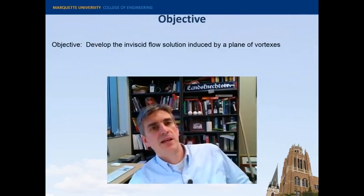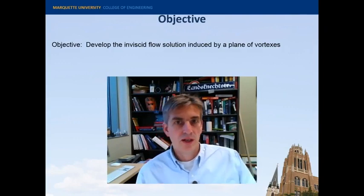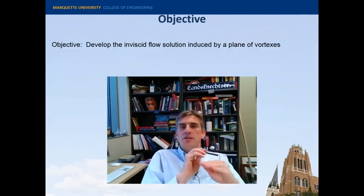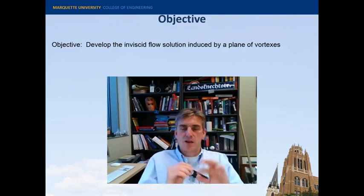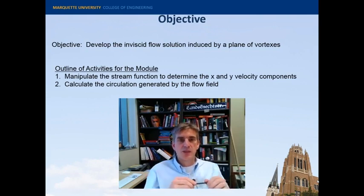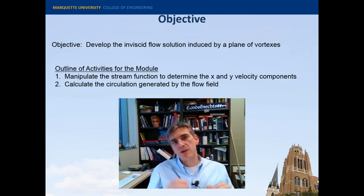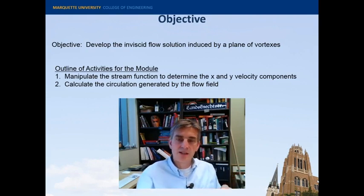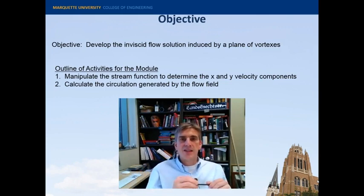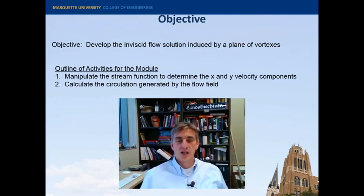So let's get right to it. The objectives of today's talk is to develop the inviscid flow solution for a row of vortices placed along the x-axis. What we'd like to do is manipulate this such that we can calculate the u and v velocity, the x component and y component of the scalar components of velocity, and then calculate the circulation that this infinitely long sheet of line vortices generates.